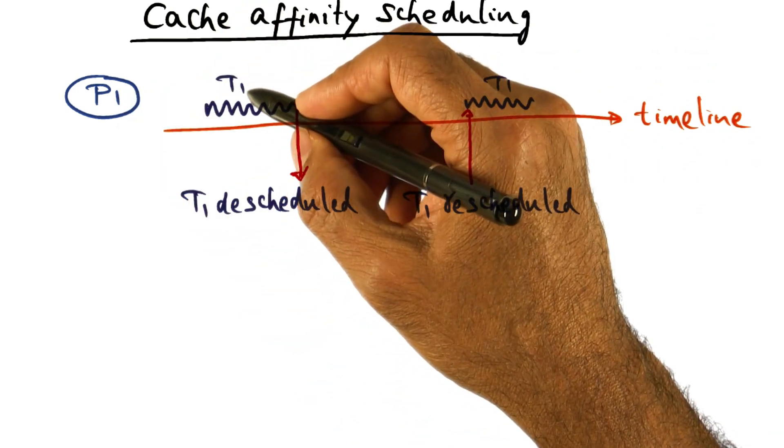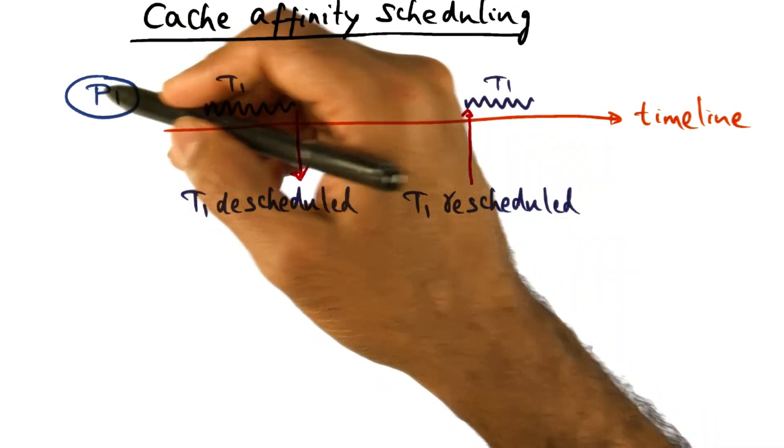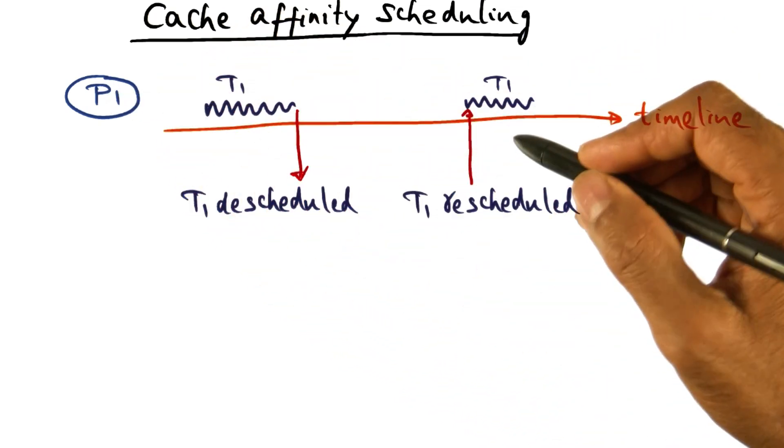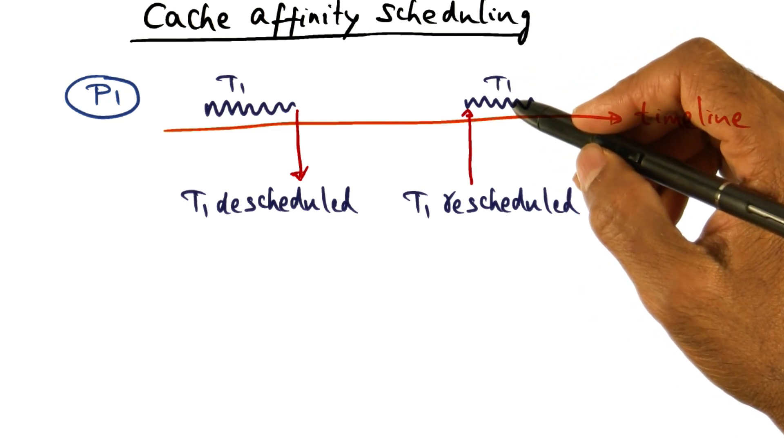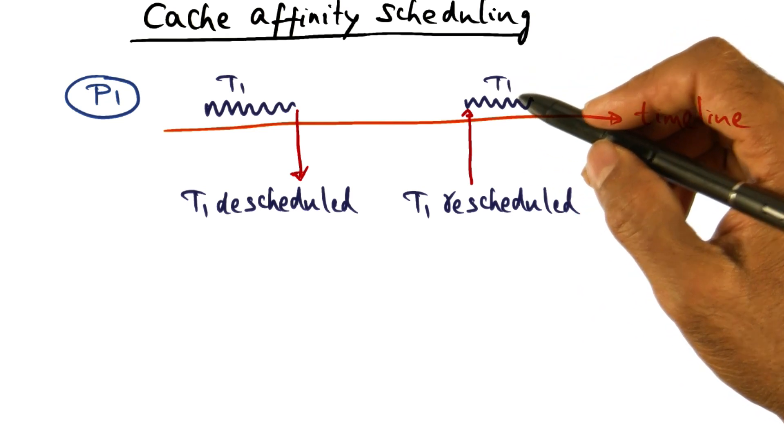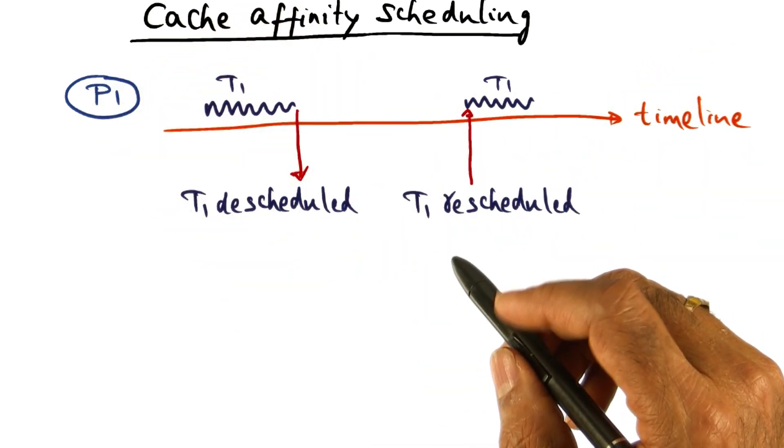So the cache affinity for this thread is likely to be higher for P1 because it ran on P1 before, got descheduled, and when it is time to reschedule it, if you reschedule it on the same processor, there's a good chance that T1 will find its working set in the memory hierarchy, the caches of processor P1.